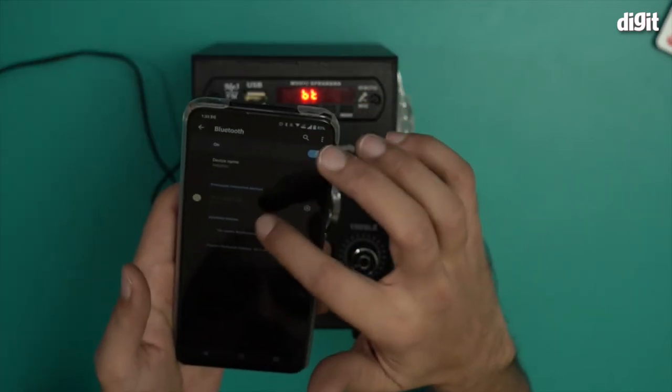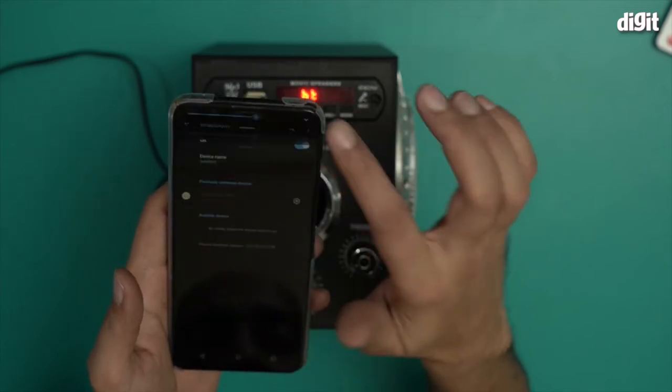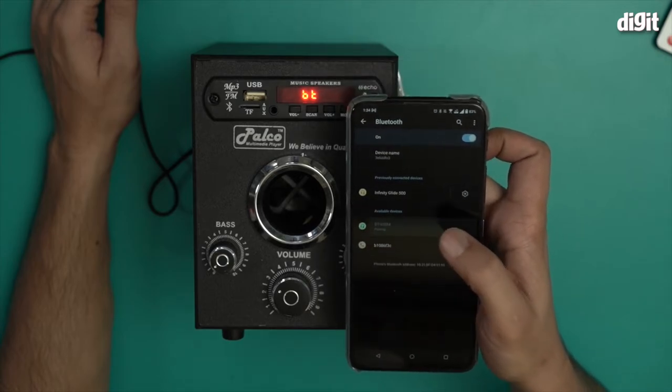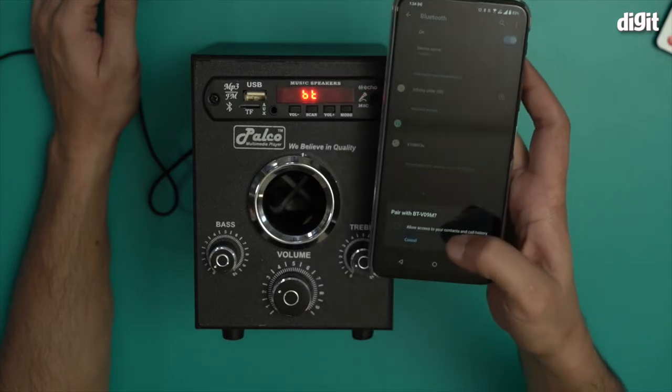I'm not getting any devices right now. I will try this again. I'm getting a BT V09M. Let's see what happens when I click on that. I'm going to click on pair.